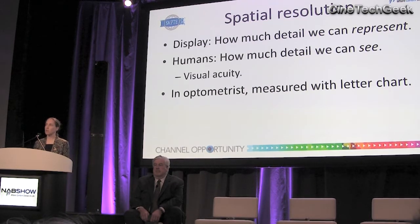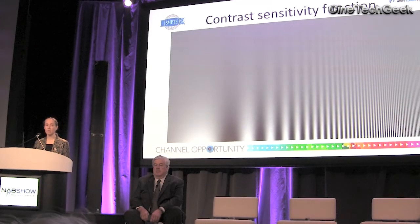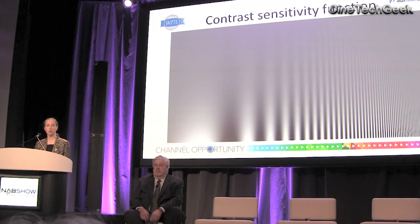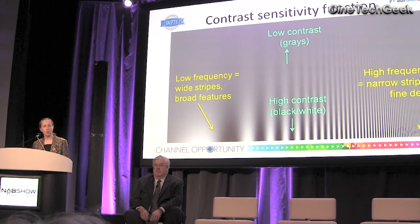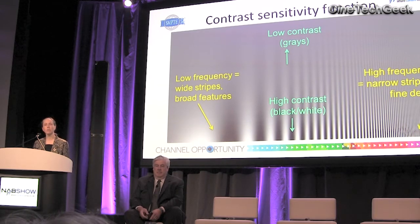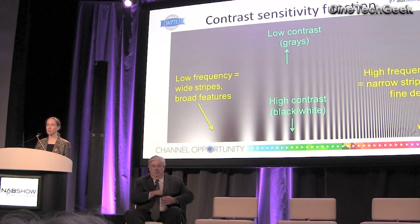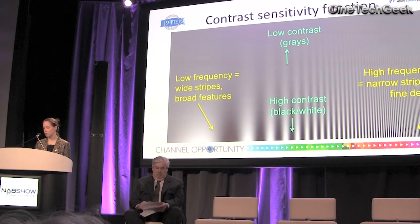If you go to your optometrist, they'll probably measure this with a letter chart like this one. But in vision science, we use the contrast sensitivity function. This image on screen basically enables you to read off your own contrast sensitivity function. From left to right, the spatial frequency of the stripes is increasing — low frequency means broad stripes, high frequency means narrow stripes or fine detail. And the contrast is decreasing from bottom to top, so at the bottom we have high contrast, the stripes going between black and white, and at the top, low contrast, going from light gray to dark gray.